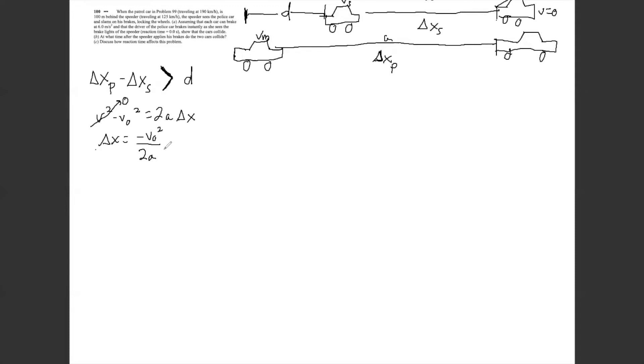So then we just have to sort of come up with some good labels here. So we know that delta x of the speeder is going to be negative vs squared over 2a. And that acceleration is the same acceleration for both vehicles. They both have that same 6 meters a second squared deceleration parameter, so there's no need to separate. We could just call it a.